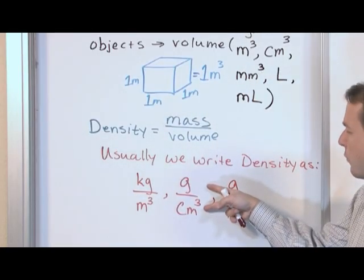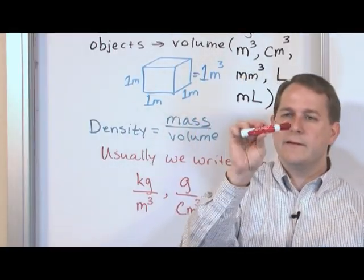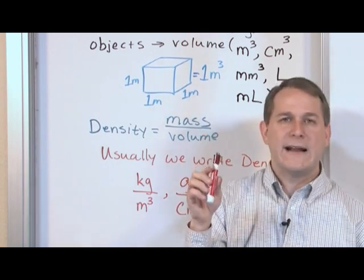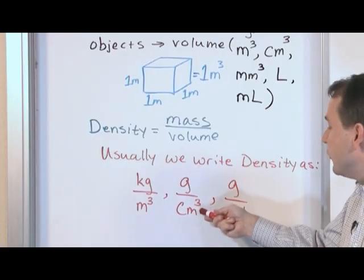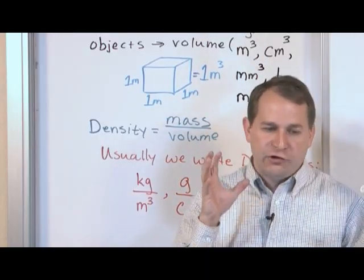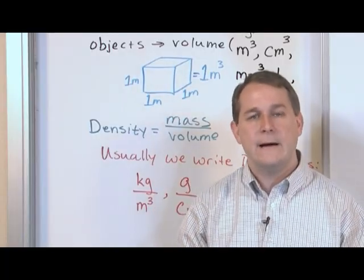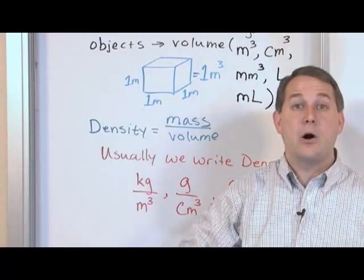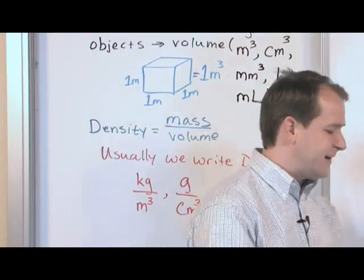For a physically smaller object, it makes more sense to use grams per cubic centimeter. This marker might be around seven or eight cubic centimeters in volume and five or six grams in mass. Dividing those two numbers gives you how many grams per cubic centimeter — that's how much mass is in that small volume. That's why it's useful to compare two objects using density: when you divide, you equalize the scale so it doesn't matter how much of the material you have — you're comparing the same physical volume for the two objects.